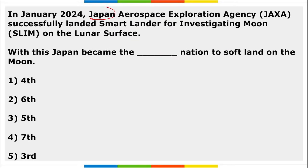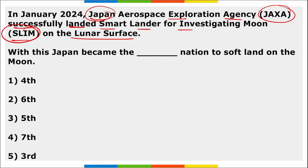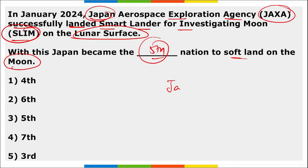Japan's Aerospace Exploration Agency (JAXA) successfully landed the Smart Lander for Investigating Moon (SLIM) on the lunar surface. With this, Japan became the fifth nation to soft-land on the surface of the Moon. JAXA is the Space Agency of Japan, similar to ISRO for India.